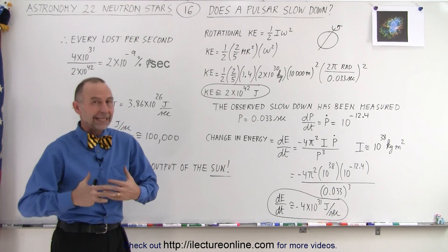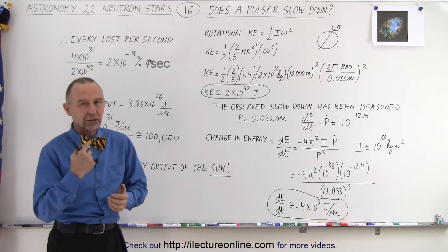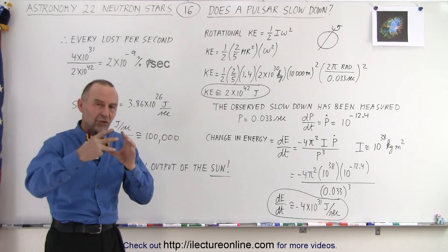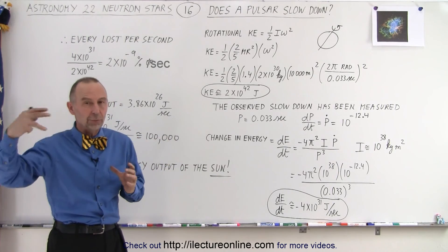Does the pulsar slow down? The answer is yes, it does slow down. The rotation begins to slow. It's kind of like what happens to the Earth because of the Moon. There's interaction, a gravitational interaction between the Moon and the Earth.